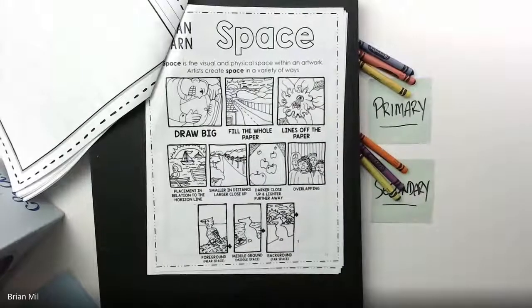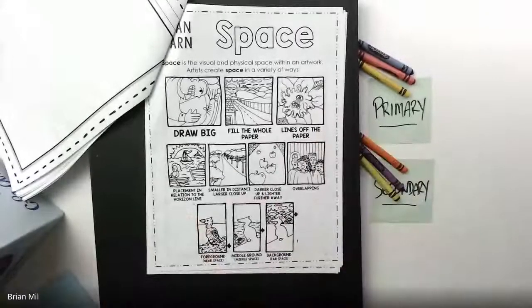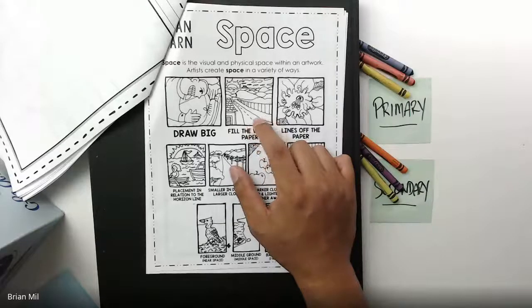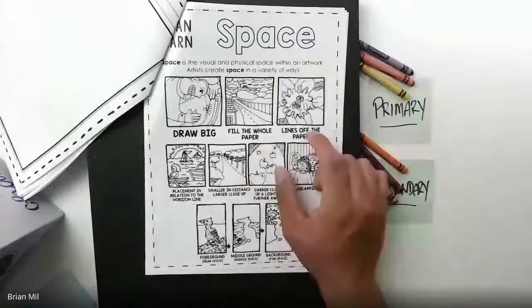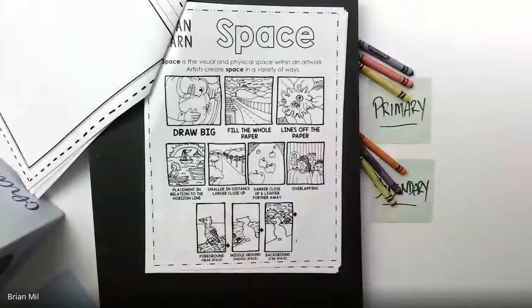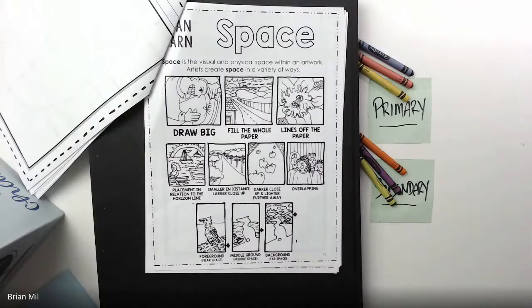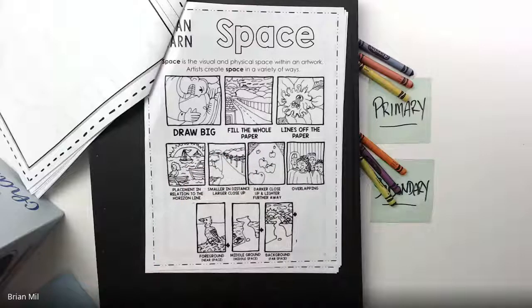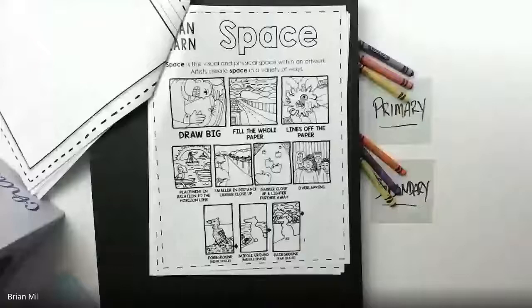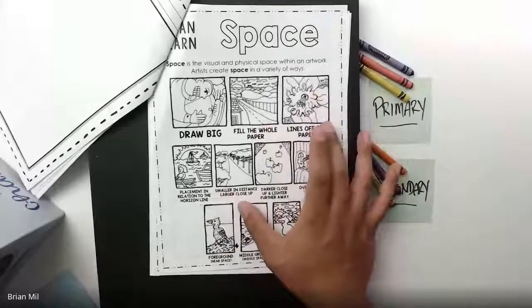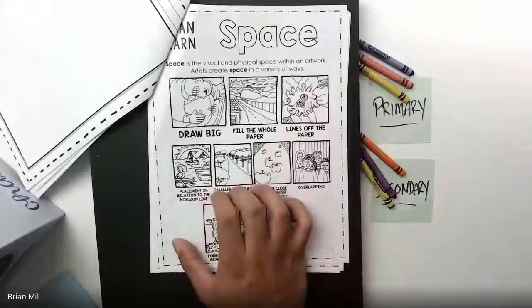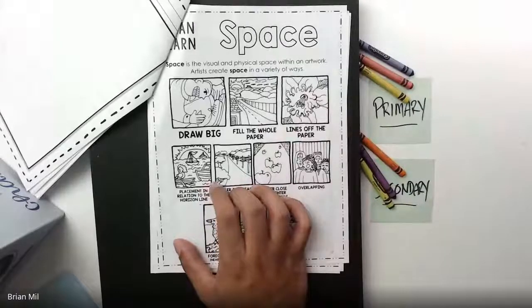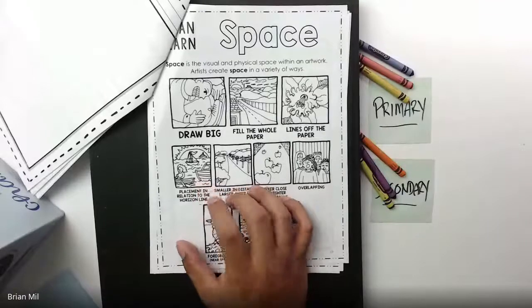Over here we have a couple of examples. One example is drawn big, another is filling the whole paper up using every single color of the page, and this one goes off the paper. These examples are here to illustrate space. Another way you can use space is when you place objects in relation to the horizon line, which we'll probably talk about today.